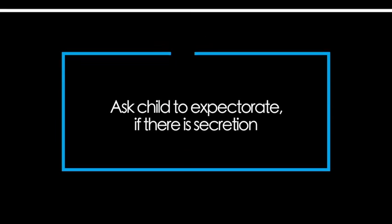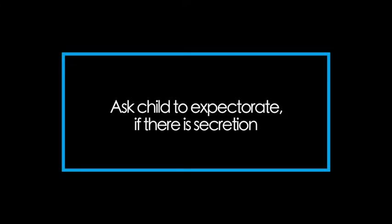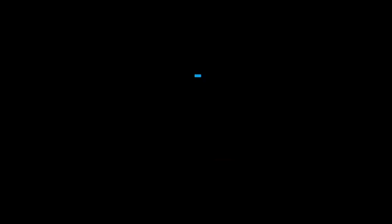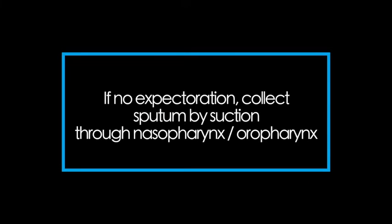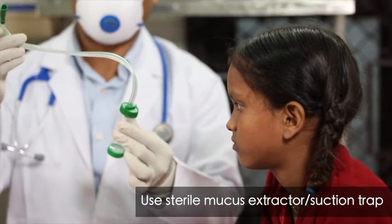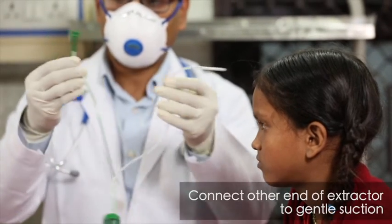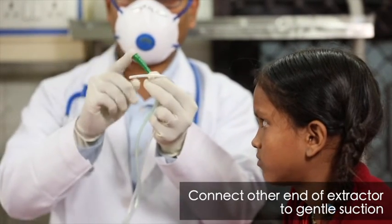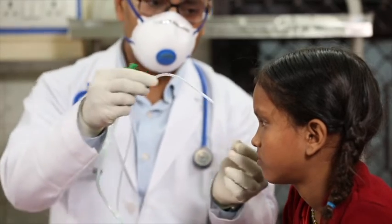If there is sputum production and the child can expectorate, collect the sputum in a sterile container. If the child is still unable to expectorate, or if it is a young child needing assistance, sputum can be collected by suction through the nasopharynx or oropharynx. Use a sterile mucus extractor or suction trap, with the other end connected to gentle suction of around 100 cm of water.